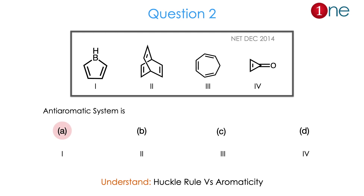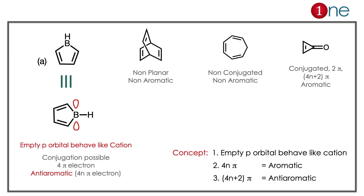Let us see how. The four structures are given. Looking at the others besides A: the first one is non-planar, hence non-aromatic — it is a bridged system and conjugation is not favorable. The second is a non-conjugated system — when a carbon is sp3, it is a non-aromatic system. The third is definitely aromatic because it has 4n+2 pi electrons — it has two pi electrons, so it is aromatic. The only possibility is A. It has four pi electrons, making it a 4n system. The conjugation is enabled by the empty p orbital of boron — boron's empty orbital creates the conjugation, making it anti-aromatic. The concept: empty orbitals behave like a cation. 4n pi electrons are anti-aromatic; 4n+2 are aromatic.